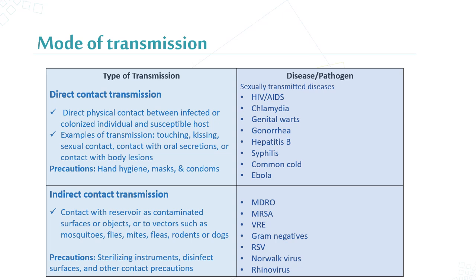Direct contact transmission occurs between an infected or colonized individual and a susceptible person. Examples include touching, kissing, sexual contact, or contact with oral secretions, body fluids, or lesions. Precautions include hand hygiene plus mask. The most important pathogens include any sexually transmitted diseases like HIV, syphilis, and hepatitis B.